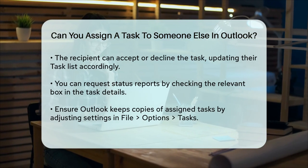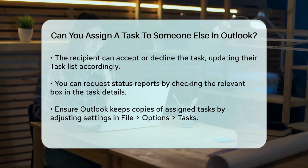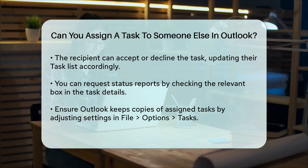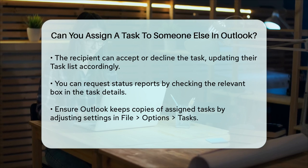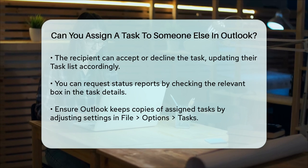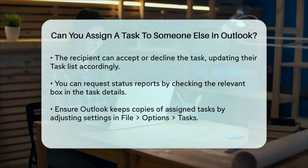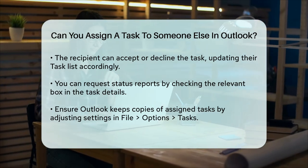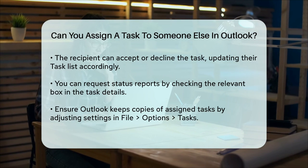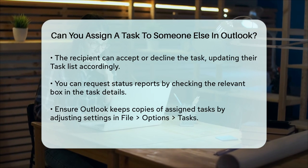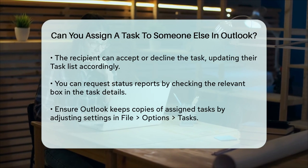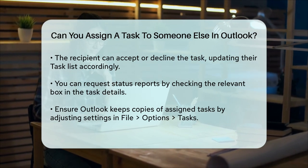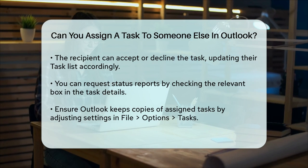If you're not seeing tasks you've assigned, make sure Outlook is set up to keep copies of tasks you assign. You can do this by going to File, Options, Tasks, and checking the box that says 'Keep my task list updated with copies of tasks I assign to other people.'